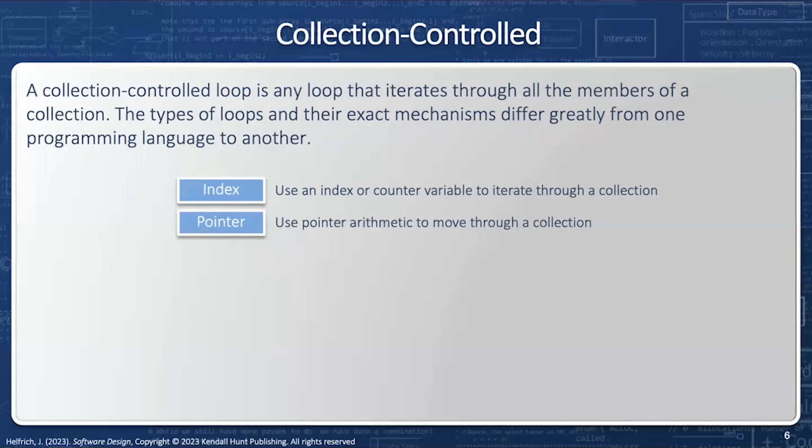Next is a pointer control loop. A pointer refers to a specific element in the collection, and then I move that pointer using pointer arithmetic. Note, not all languages have pointers, so we can't always use a pointer control loop.